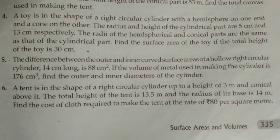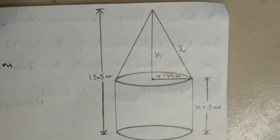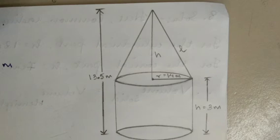Let's draw a diagram of the tent. The tent shape has two parts: a cylinder and a cone on top. From the diagram, we can see the height and radius. The total height of the tent is 13.5 meters and the cylindrical part has a height of 3 meters.